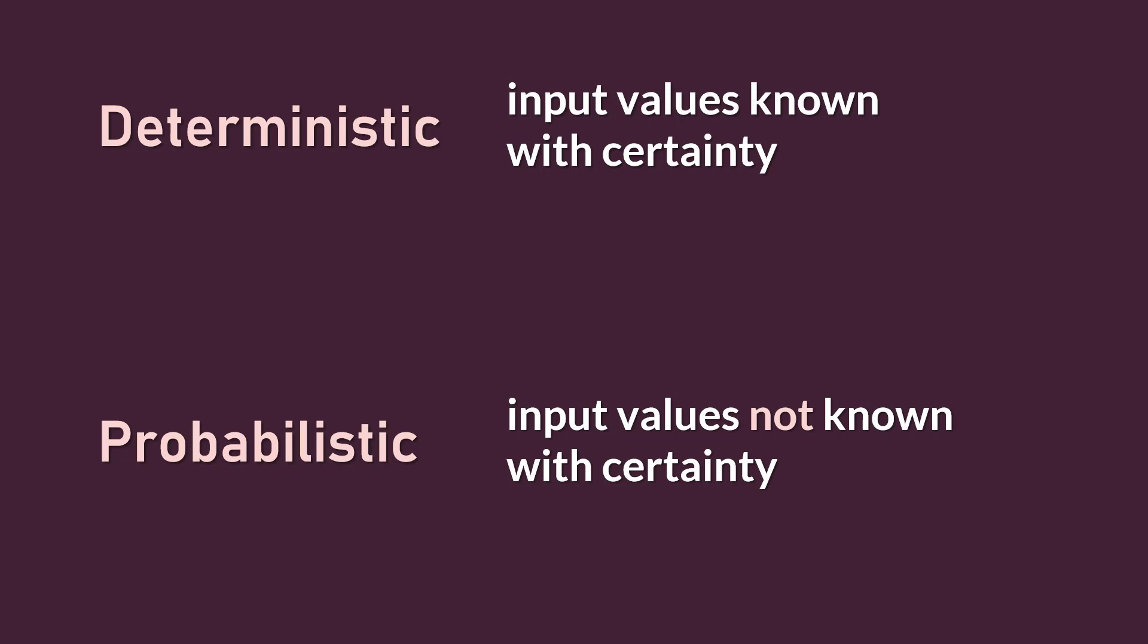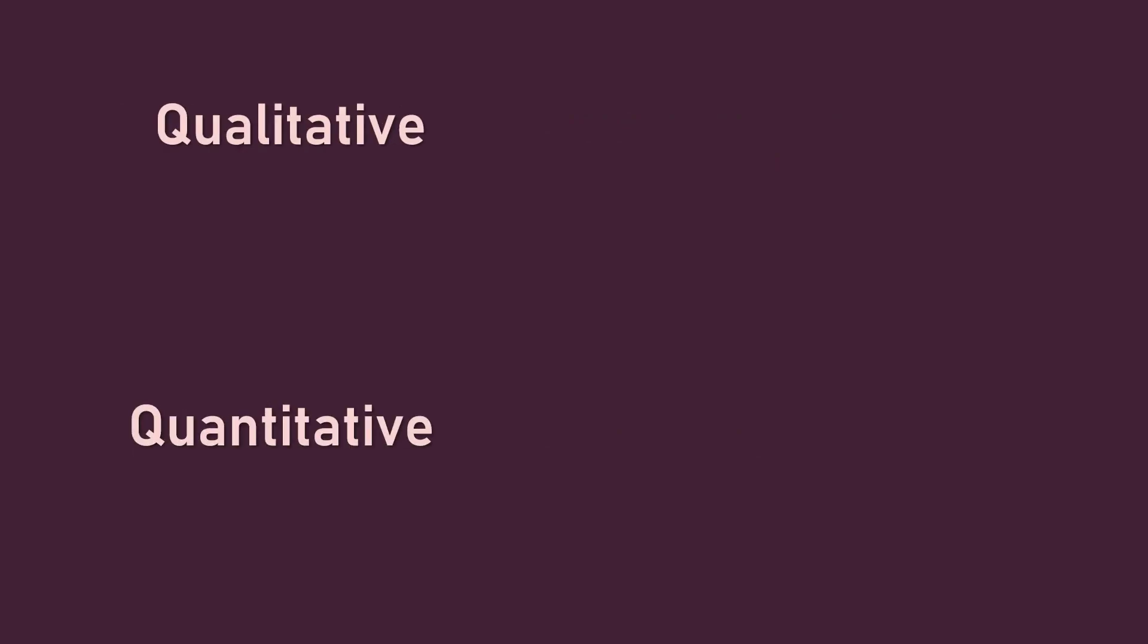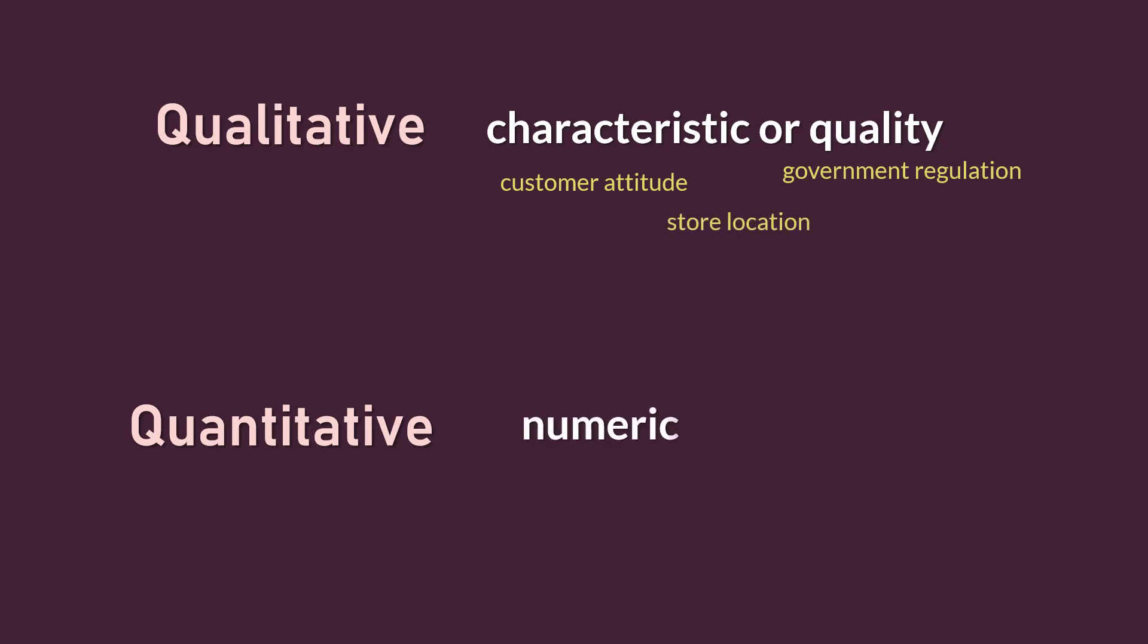Now, these input values or data can either be qualitative or quantitative. Qualitative if they only describe characteristics or qualities that are usually non-numeric. For example, customer attitude, government regulation, or store location. And quantitative if they are numeric, such as hours of production, units sold, and total revenue.